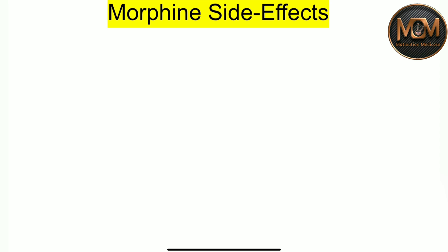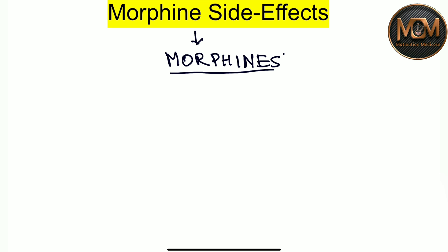So without wasting time, let's get started. To learn the side effects of morphine, morphine itself is the mnemonic. I'm just going to write it out: M-O-R-P-H-I-N-E-S. Consider all the letters from the word morphine — each letter stands for a side effect.